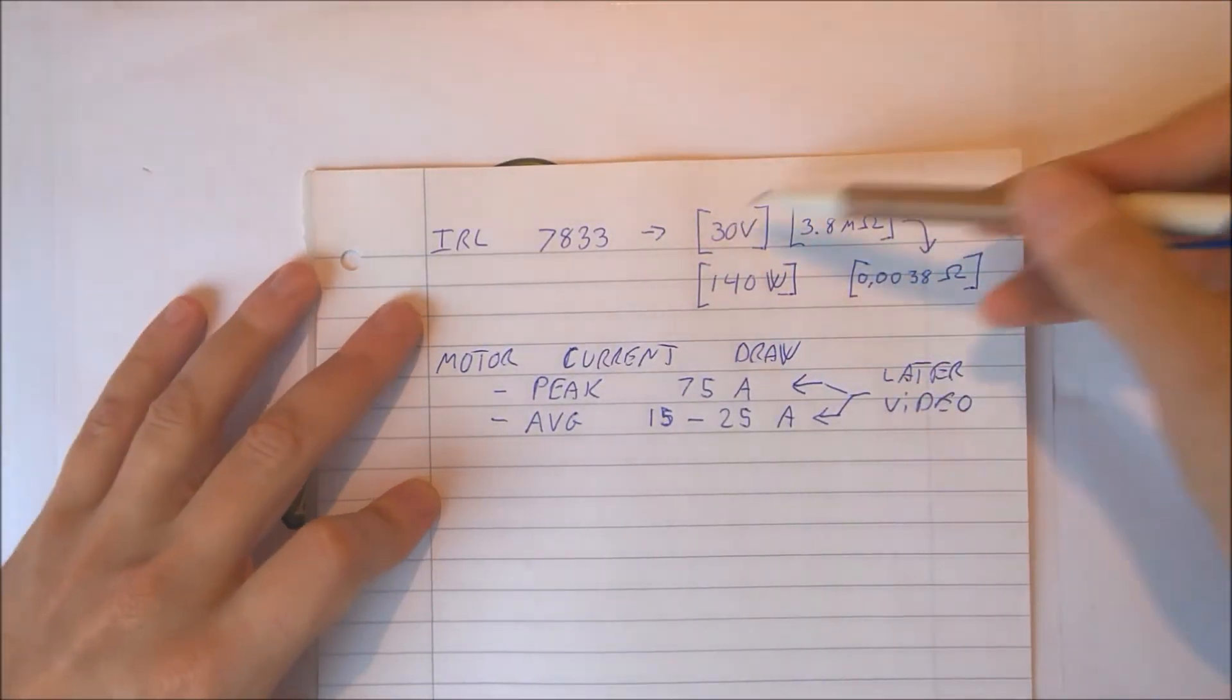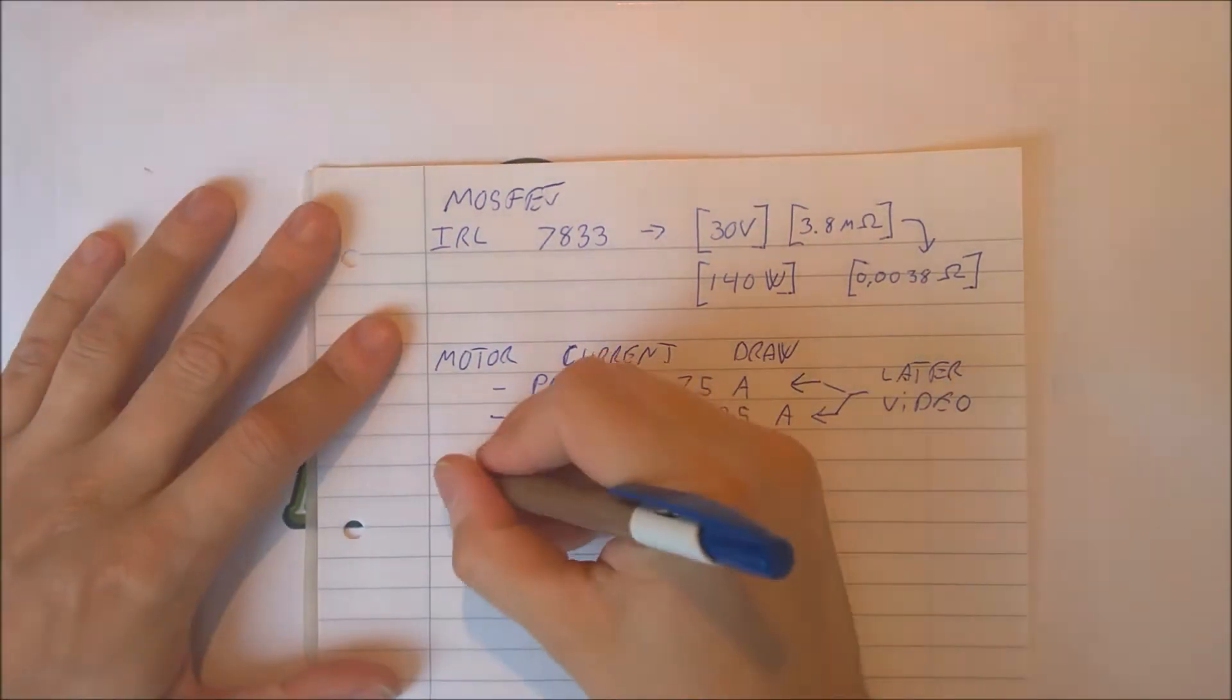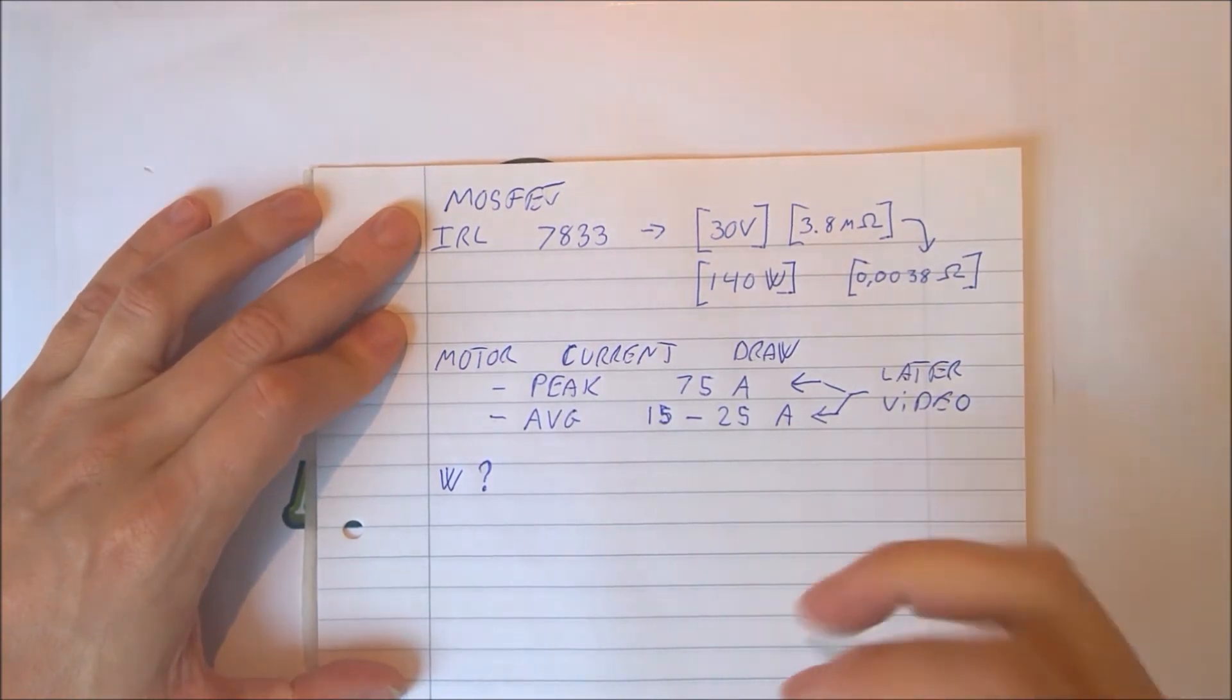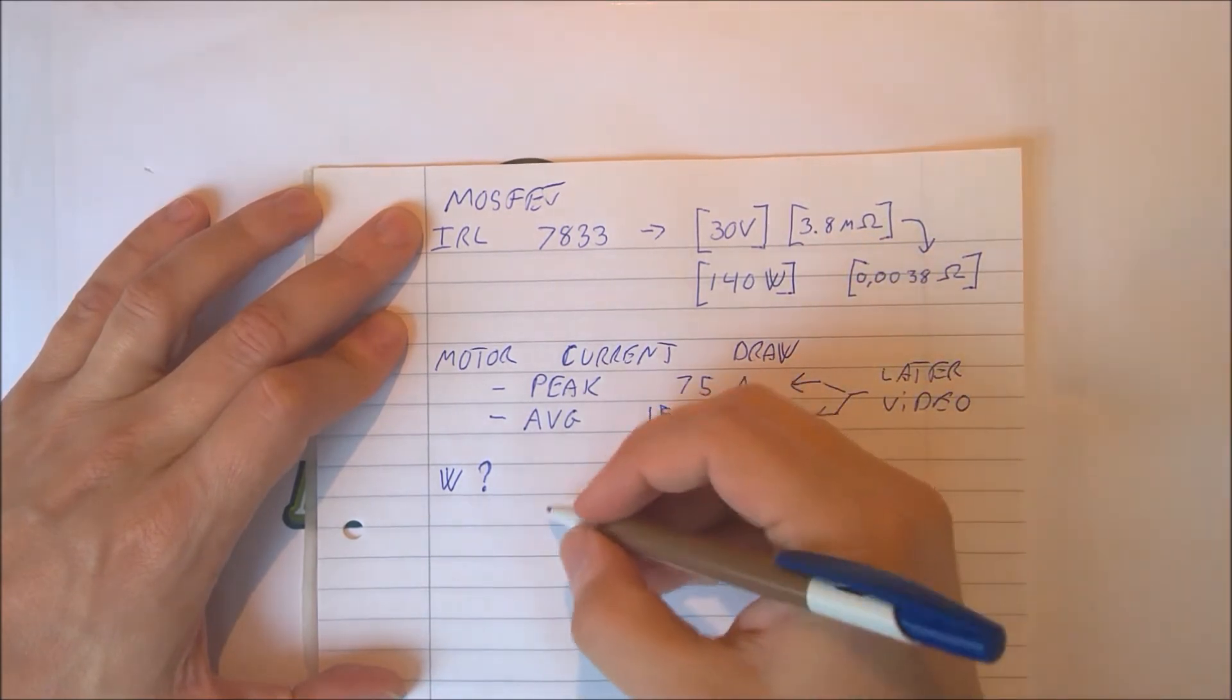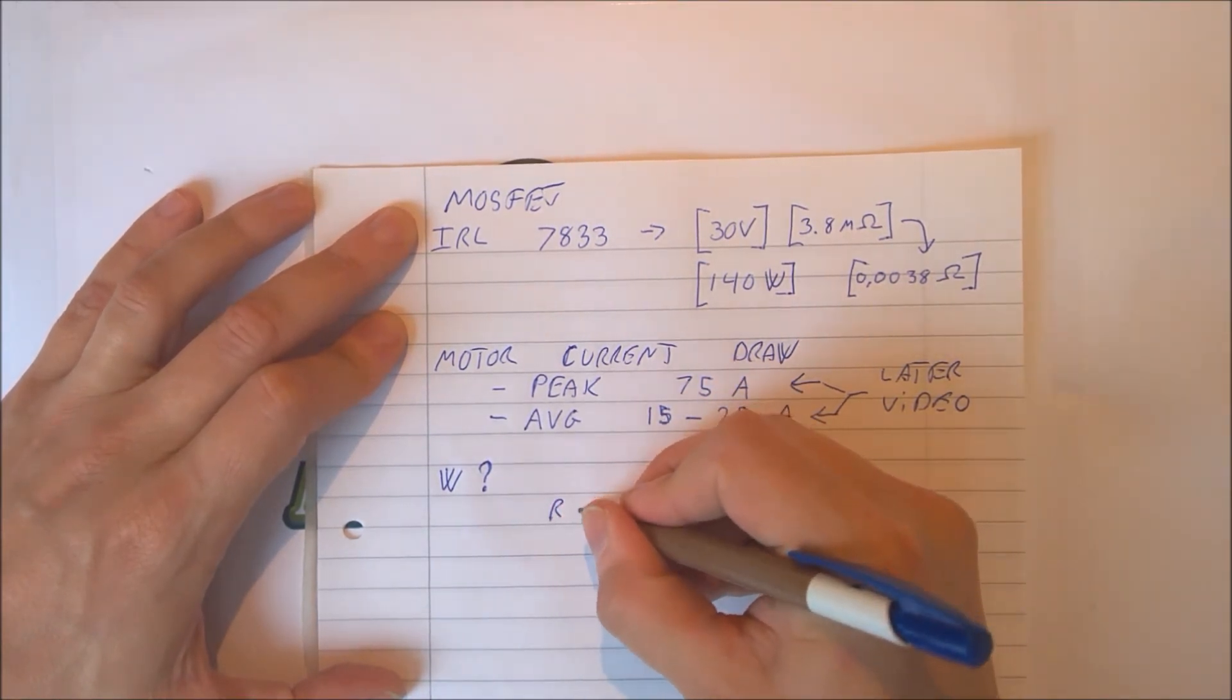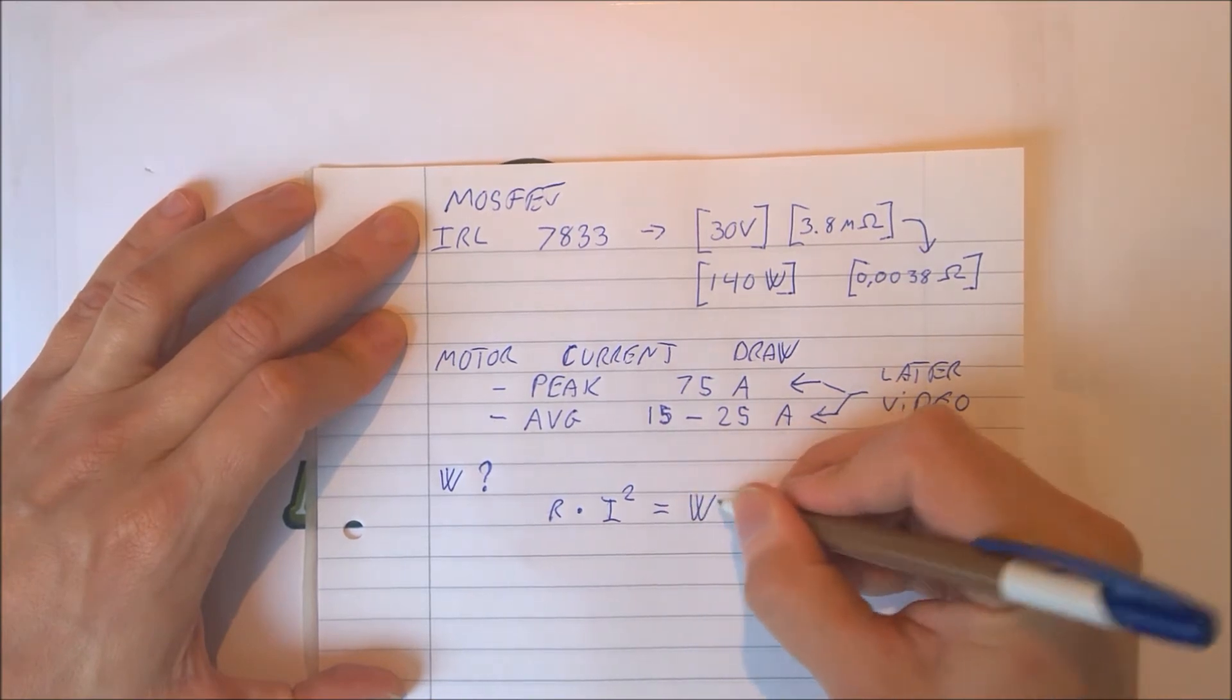We have the values from our MOSFET. Now what we want to know is how many watts does the MOSFET have to handle. The MOSFET has an internal value. Let's round this up to say 4 milliohms. To calculate this, we use a formula saying resistance times current squared equals the power.